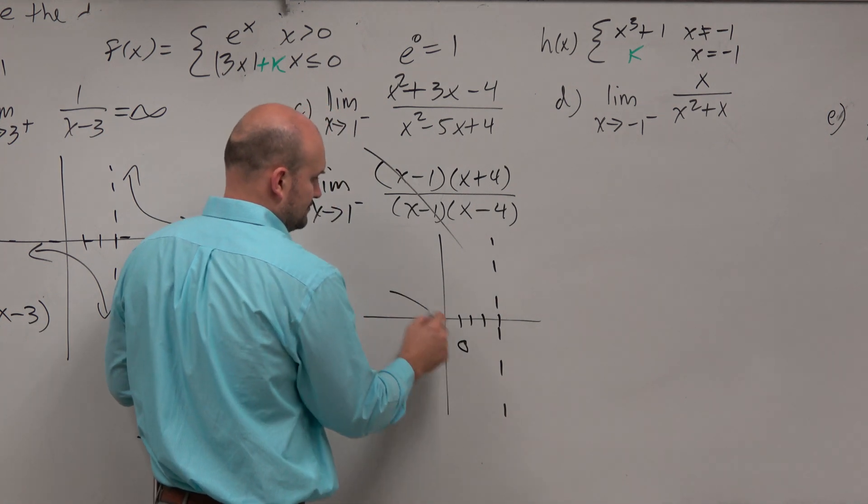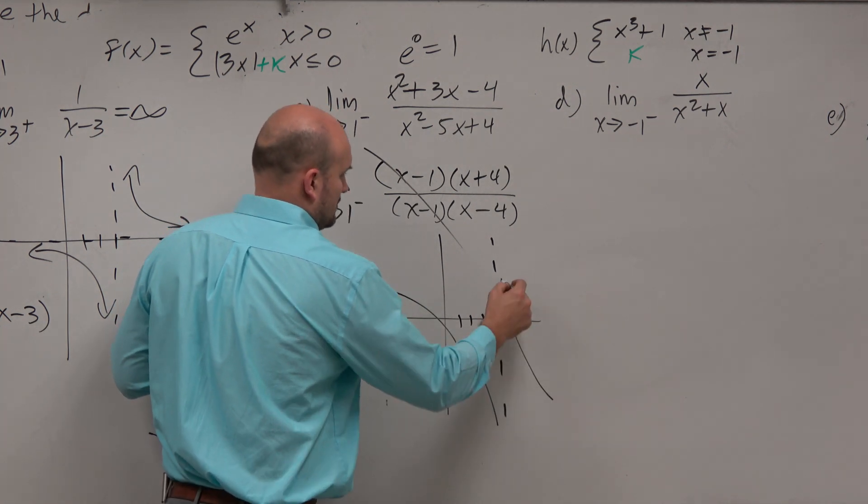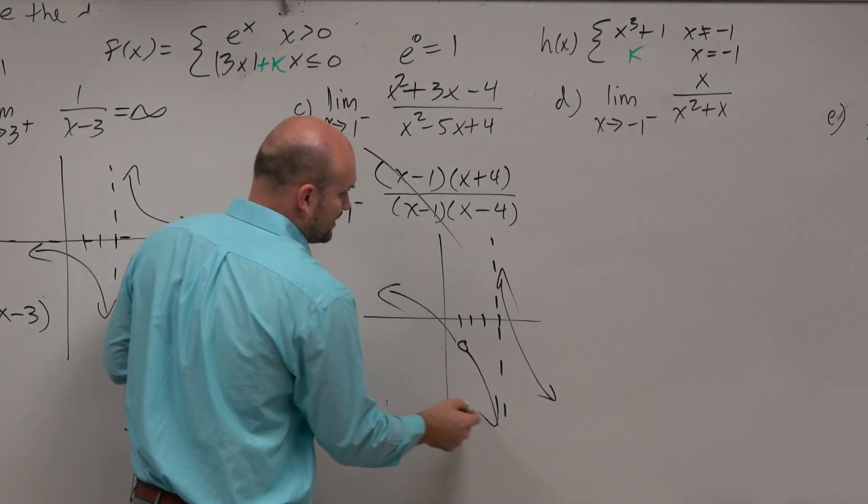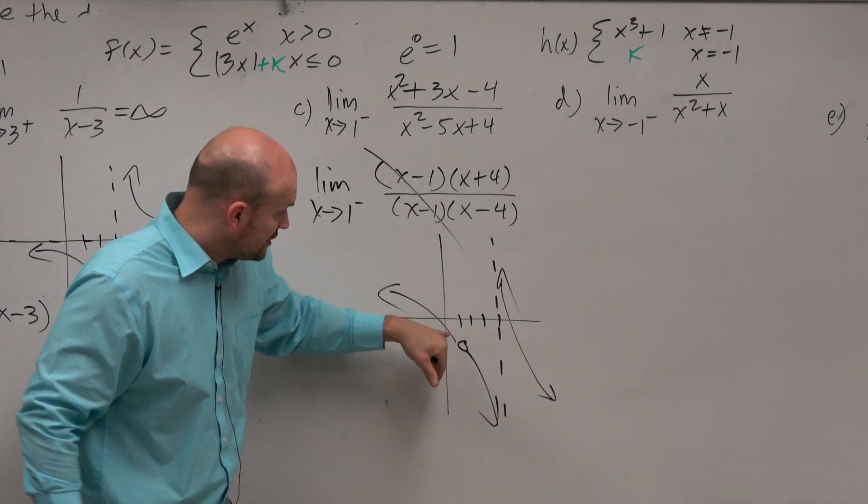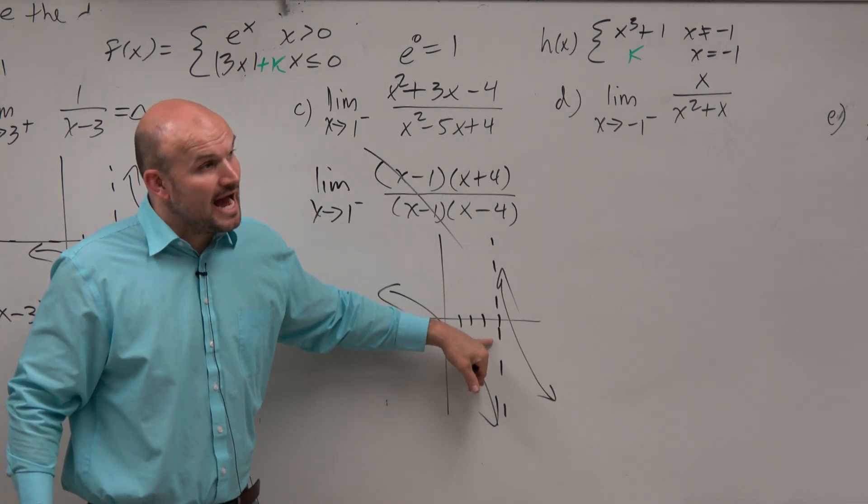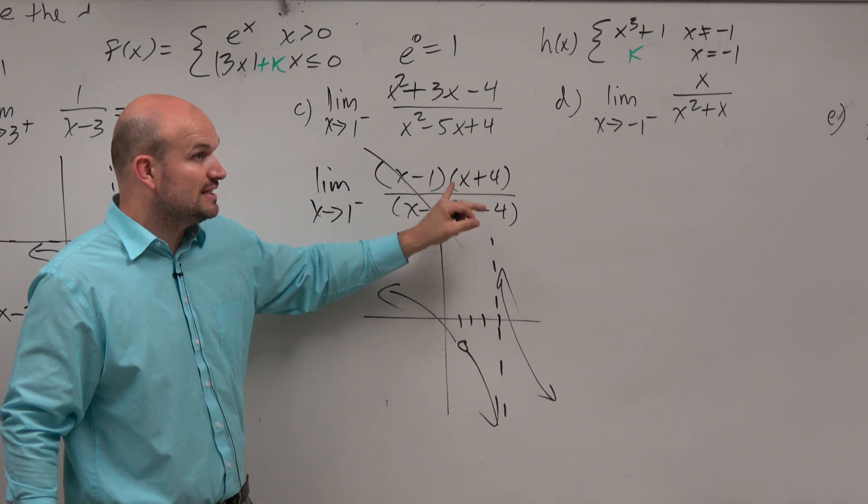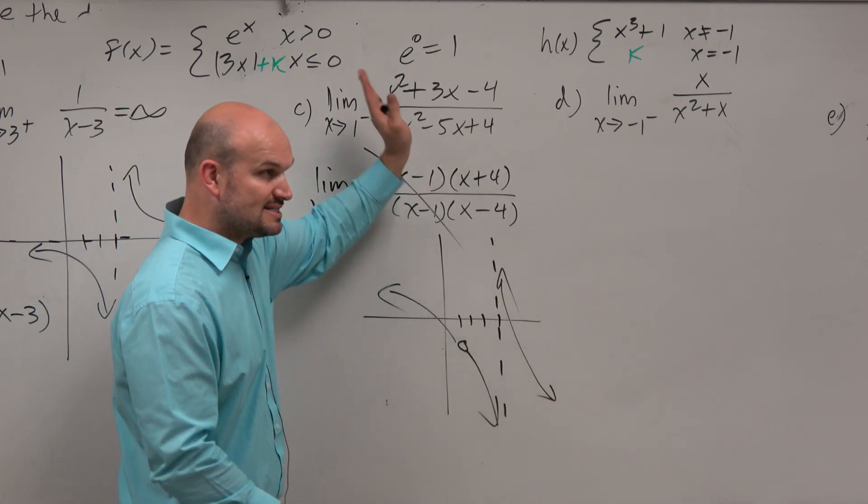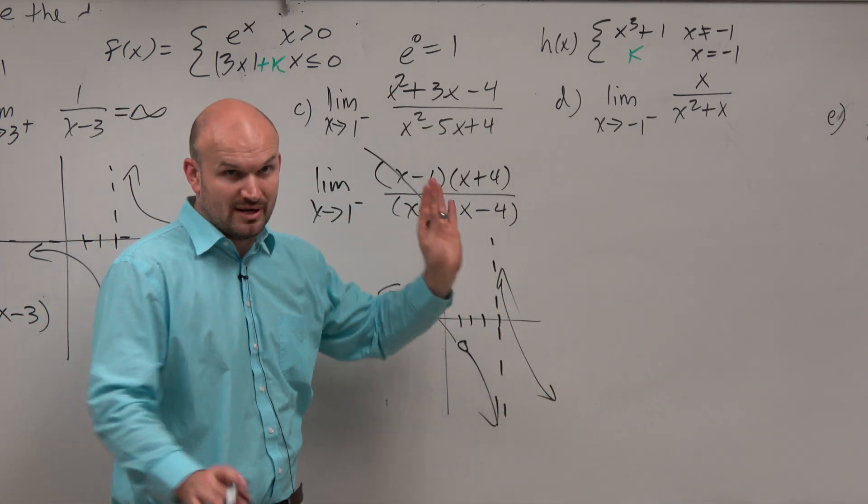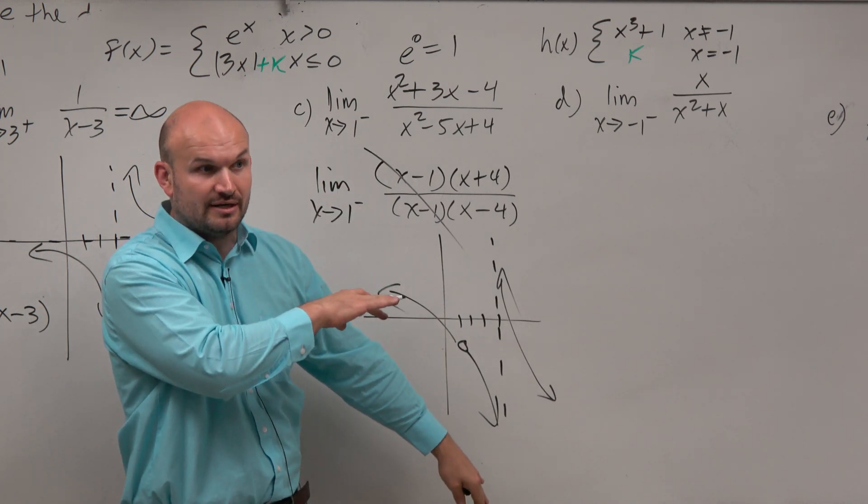I have no idea what this graph looks like. All I know is there's a hole there and an asymptote there. Now, if I was doing the limit from the asymptote, I'd want to see left or right hand limit. I want to see where is it going, infinity or negative infinity. Would you guys agree?